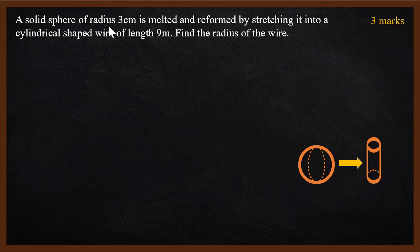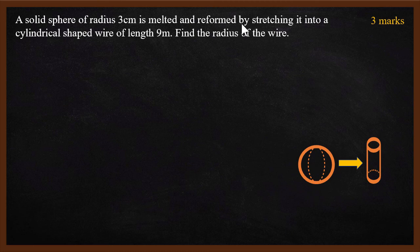A solid sphere of radius 3 cm is melted and reformed by stretching it into a cylindrical shaped wire of length 9 m. The question is: find the radius of the wire. Which wire? The cylindrical shaped wire.